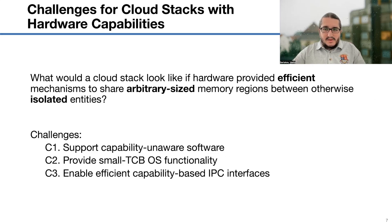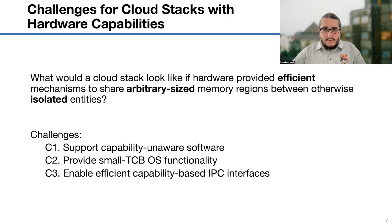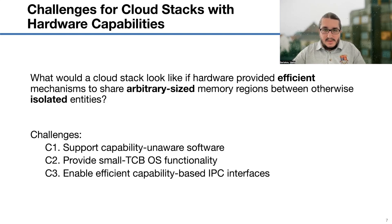In this work, we build a cloud stack using CHERI capabilities as a technology for isolation and sharing, addressing issues of existing stacks based on virtual machines and containers. Building this cloud stack faces three key challenges. First, the stack should support capability-unaware code — pure capability code is our future, but legacy software matters and people don't like changing things that work. Second, the stack should provide small TCB functionality; we don't want to rely on code we don't use. Third, it should enable efficient capability-based IPC primitives. Capabilities allow us to access memory in a zero-copy manner — how can we use this with legacy native code?